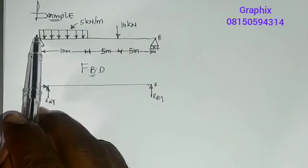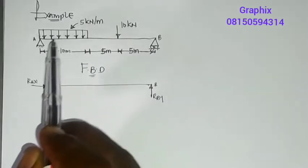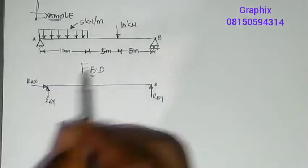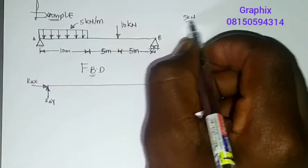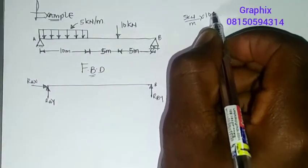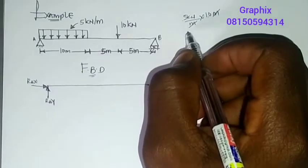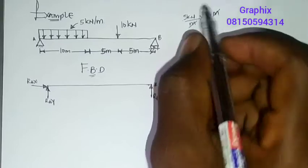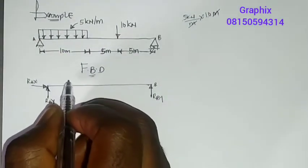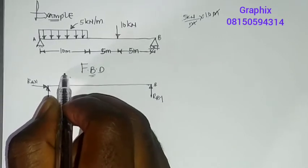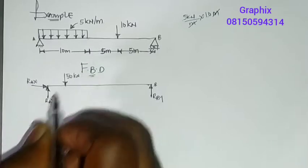This is a UDL of 5 kN per meter, meaning every 1 meter is 5 kN, and we have 10 meters. So it will be 5 kN/m multiplied by 10 meters — meters cancel, giving 50 kN. It will be acting at the center of the UDL, so we convert it to a point load of 50 kN acting downward.